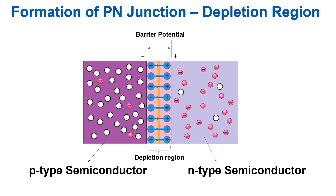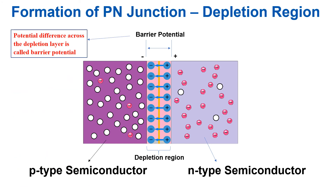Now we will see what is barrier potential. Once a P-N junction is formed and the depletion layer is created, the diffusion of free electrons stops. In other words, the depletion region acts as a barrier to the further movement of free electrons across the junction. The positive and negative charges set up an electric field, as shown in the figure. The electric field is a barrier to the free electrons in the N region. There exists a potential difference across the depletion layer, and it is called barrier potential.